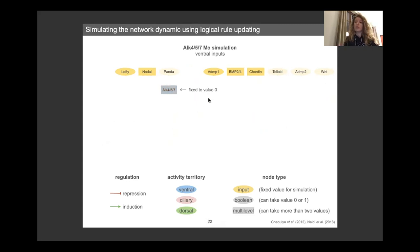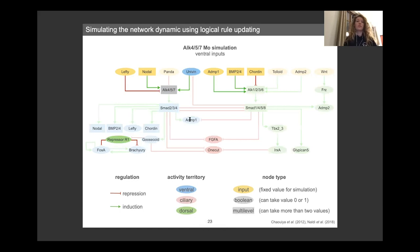In addition to this wild-type simulation, we can also make perturbation of the network by fixing one node to a value, for example here, by fixing the nodal receptor to a value of 0. It's the equivalent of a loss of function for this receptor. And we can then compare the simulation with the expected result we have by experimental experiments. And here in the simulation, you can see that with the same ventral input condition, having this loss of function prevents most of the ventral marker to be activated.